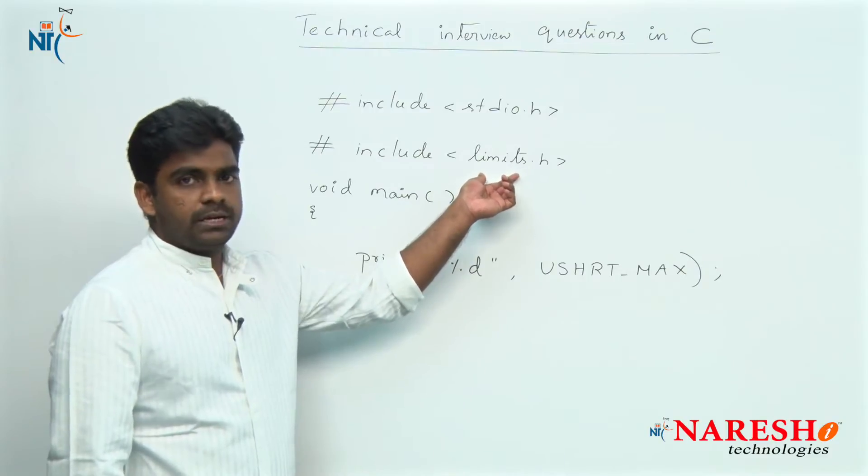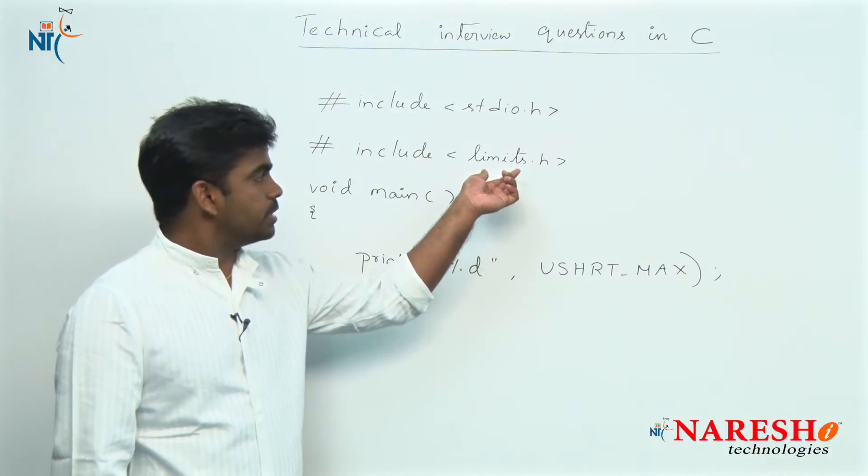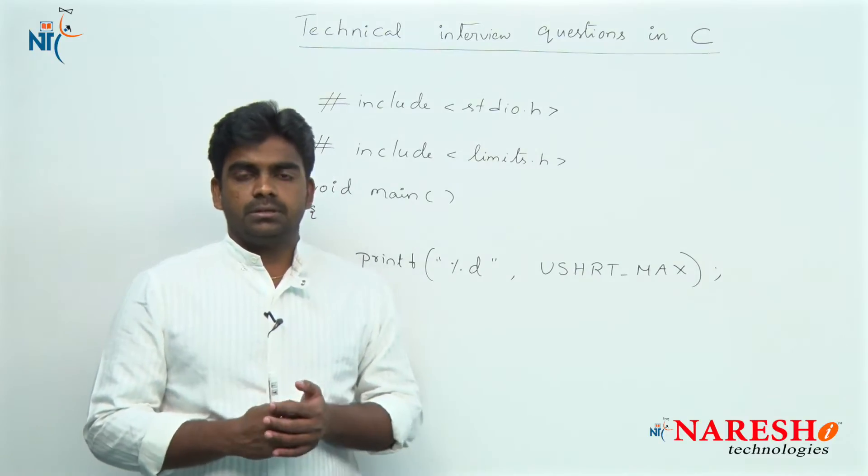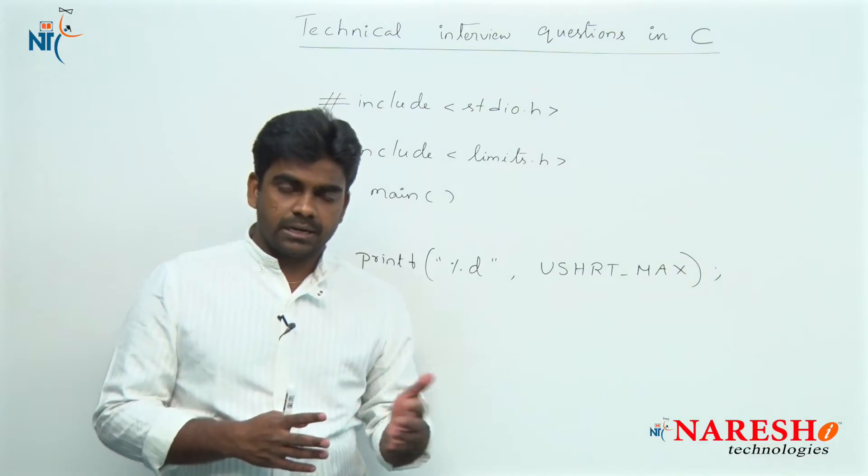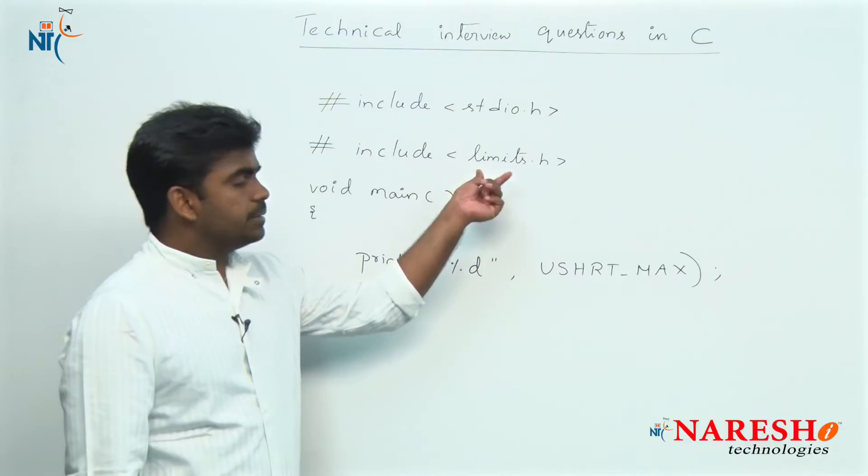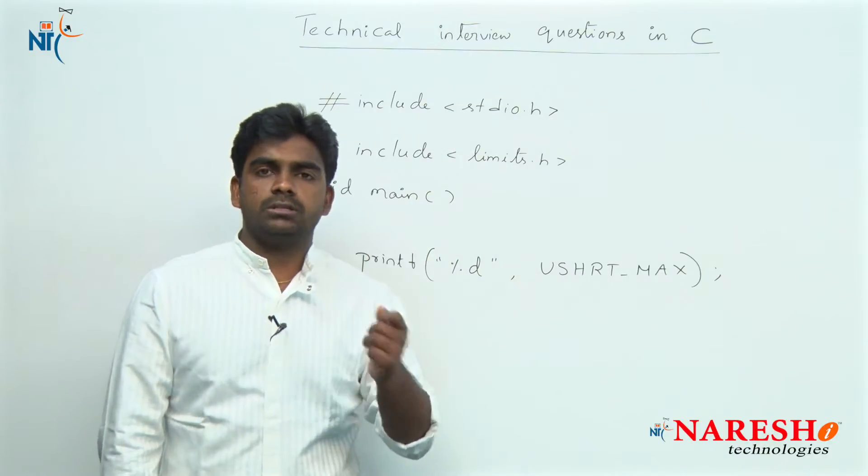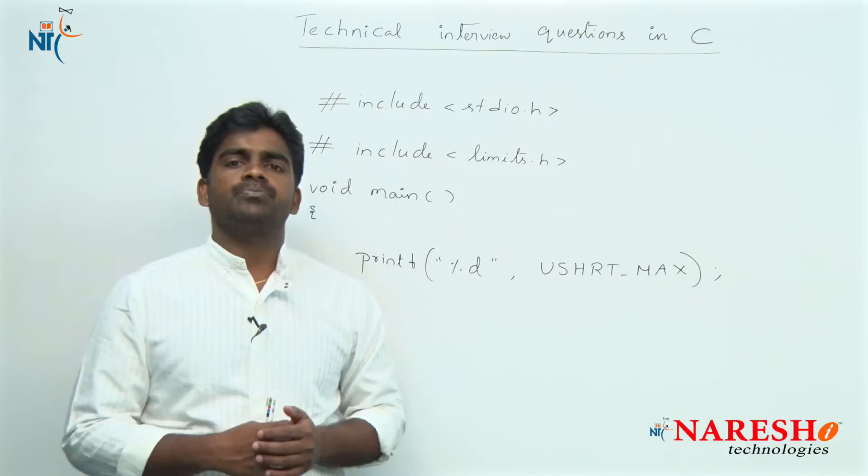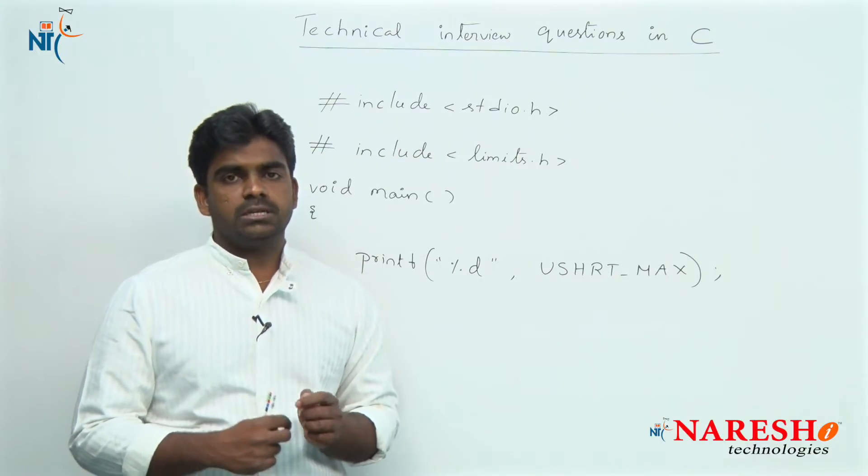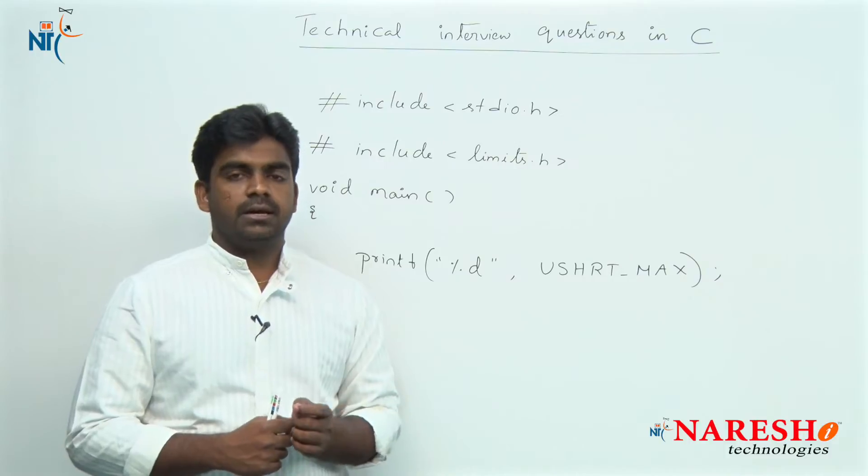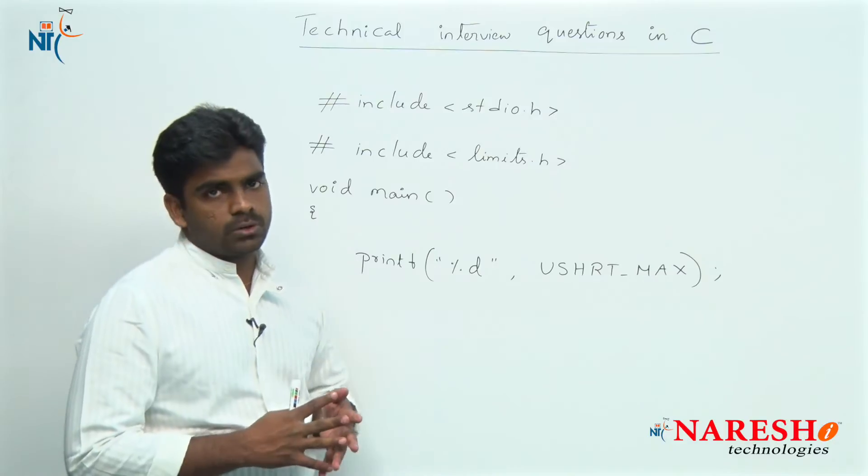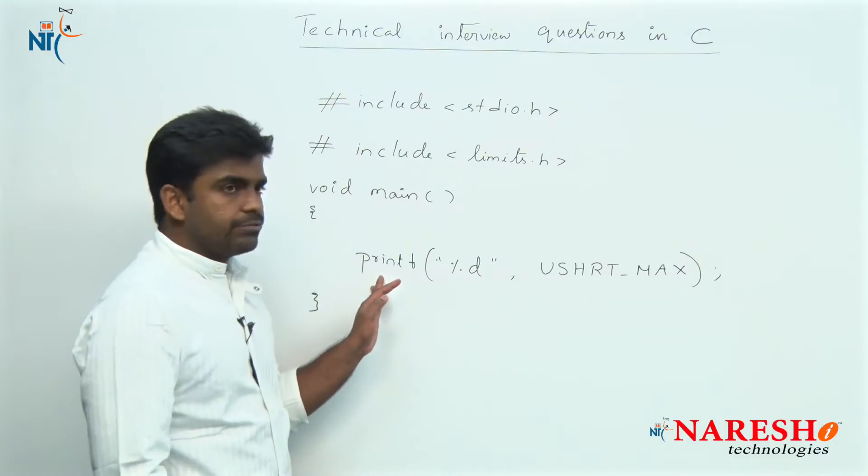This is one of the header files available in the C library. It is providing information about the limits of each data type in the C language. Limits provides variables, all are constant variables. We know that constant variables are represented using capital letters. Here you can find all the variables.